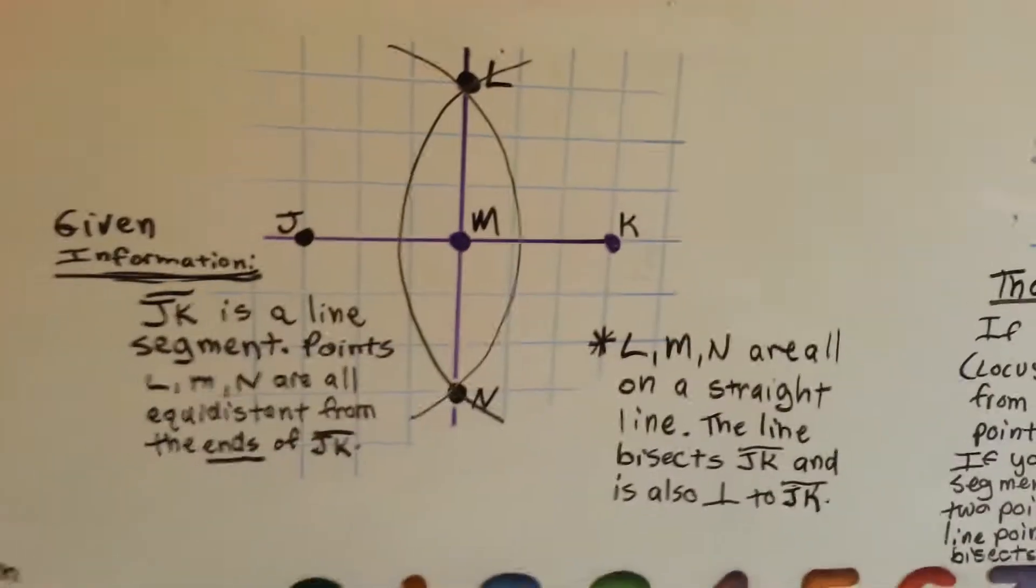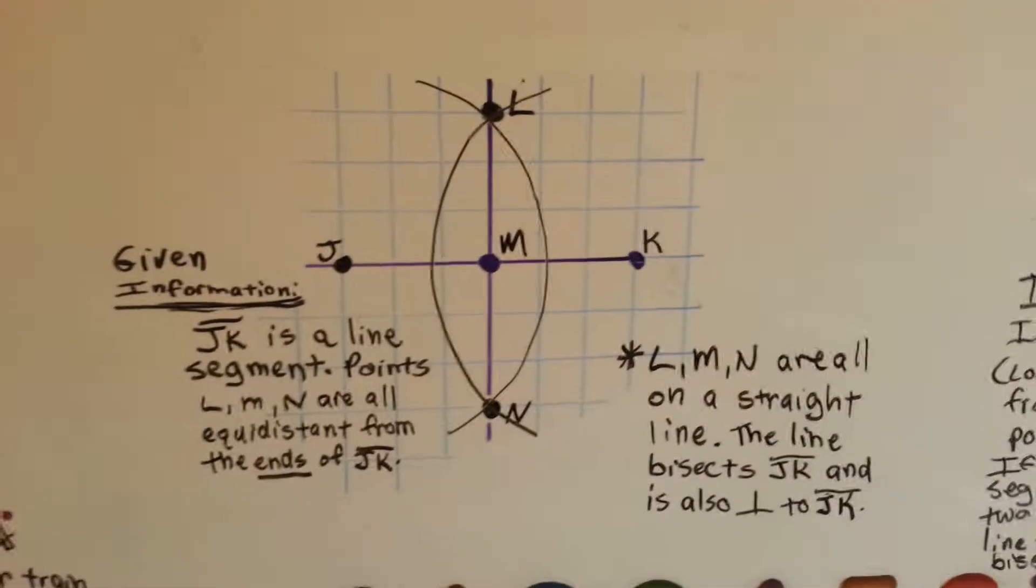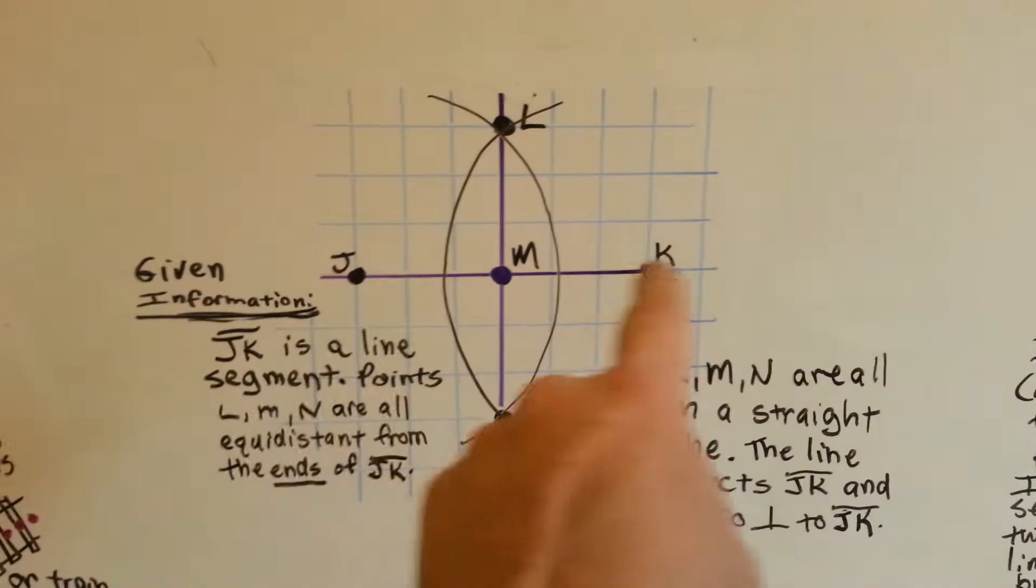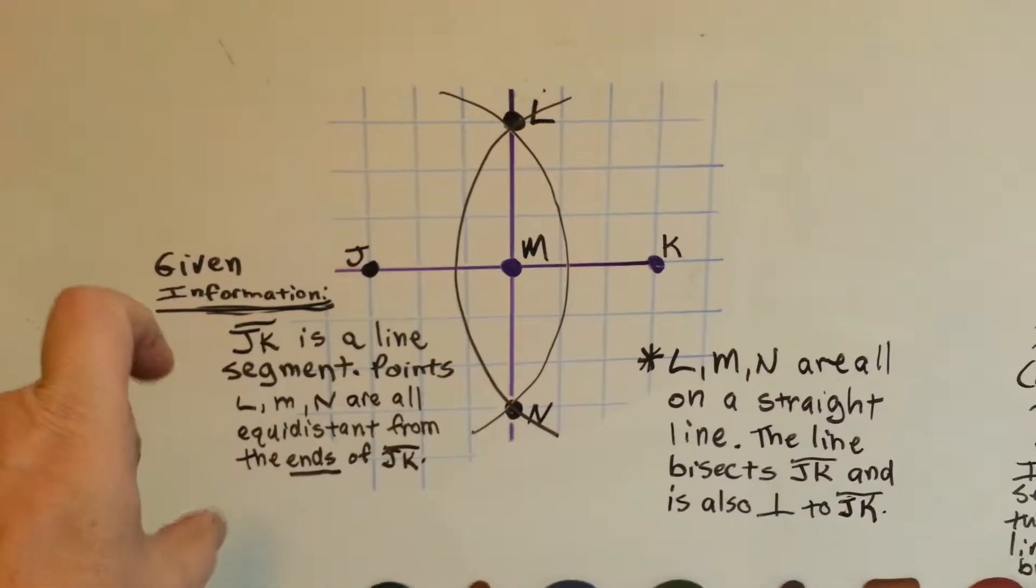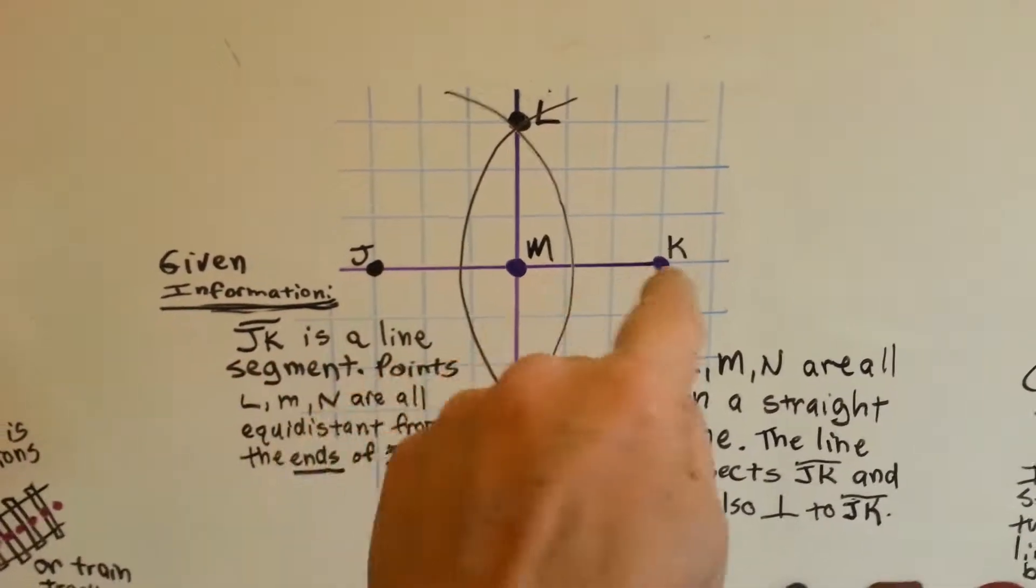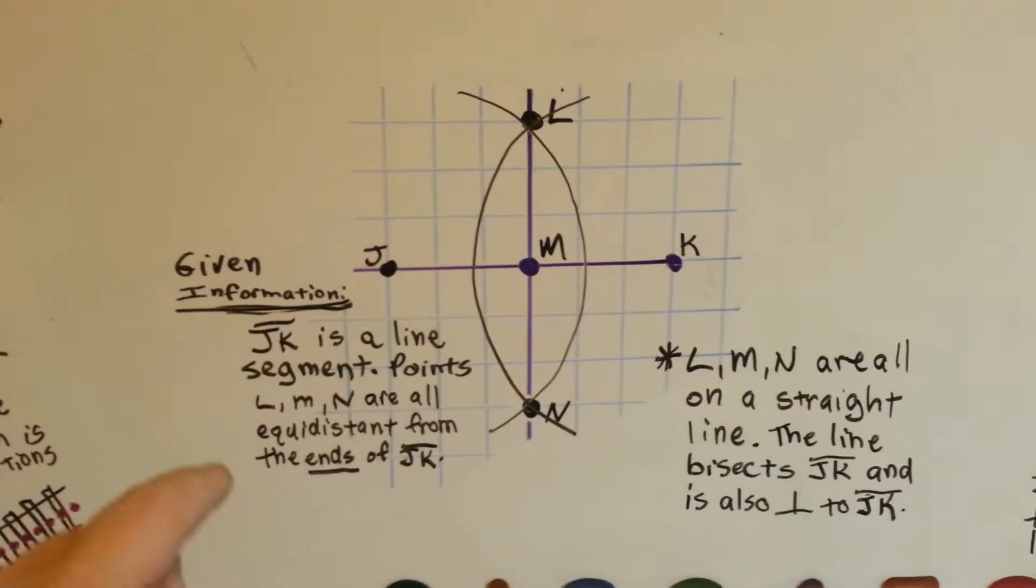Let's see what we've got here. We have this line segment JK. And our given information is that JK is a line segment. So, I drew a line segment.